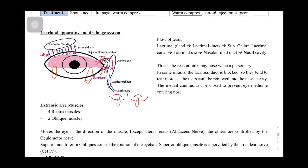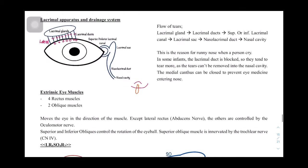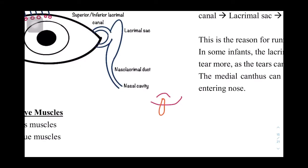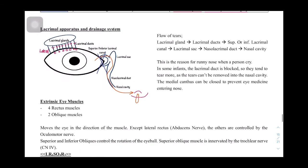When you apply eye drops, the medicine can travel through the nasolacrimal duct to the nasopharynx and reach the taste buds, causing an unpleasant taste. To prevent this, you can close off the medial canthus area using your finger, blocking the drainage so the medicine cannot enter the nose.